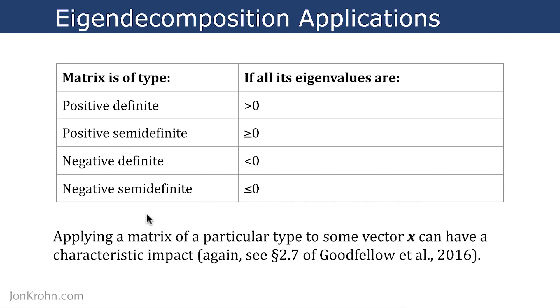So applying a matrix of one of these particular types to some vector x has a characteristic impact on that vector x. And you can see section 2.7 of Goodfellow et al., the book called Deep Learning, which was released in 2016 by MIT Press and is available free online.